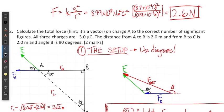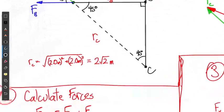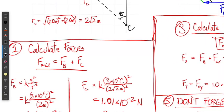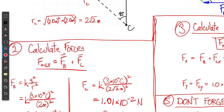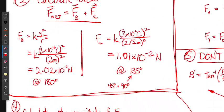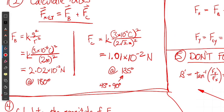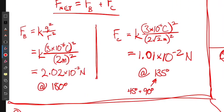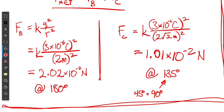That's step one — everything is now set up. We know the magnitude of our charges, 3 microcoulombs, and we know the distances we need. Net force as a vector equals the force of B plus the force of C. The force from B is calculated using the distance and the magnitude of the charge plugged into Coulomb's equation. Conveniently, the charges have the same magnitude, which simplifies our problem.